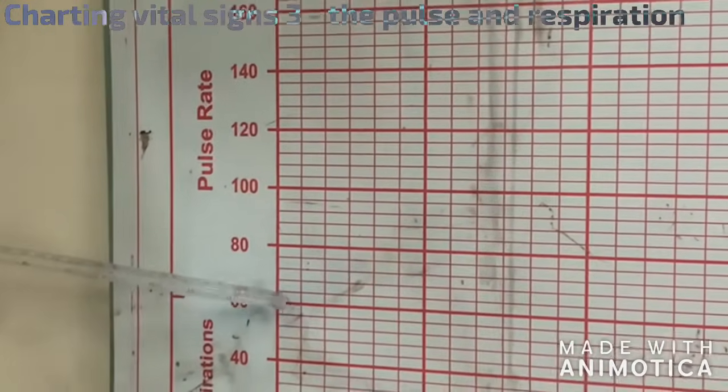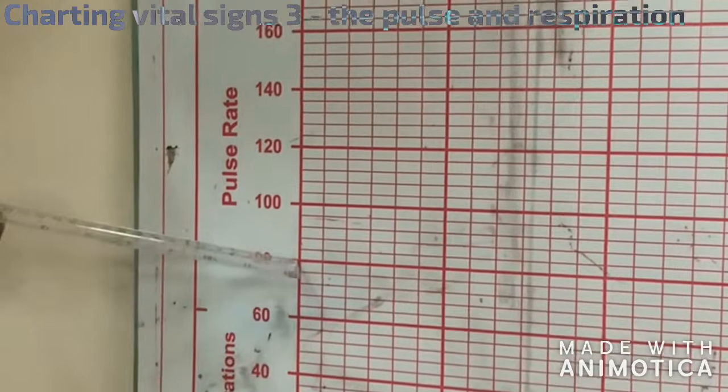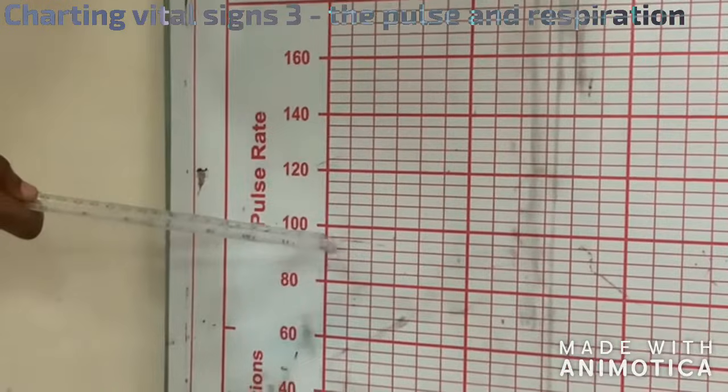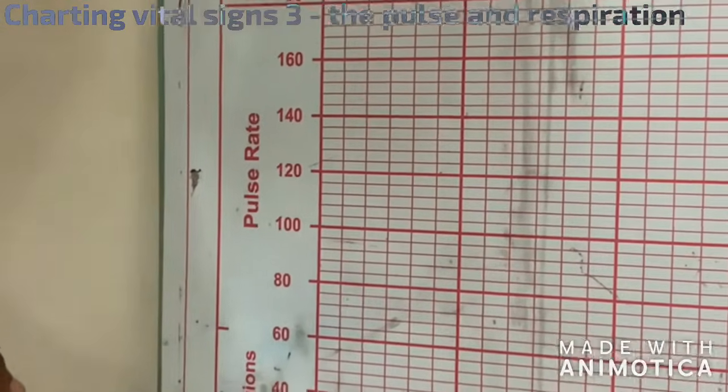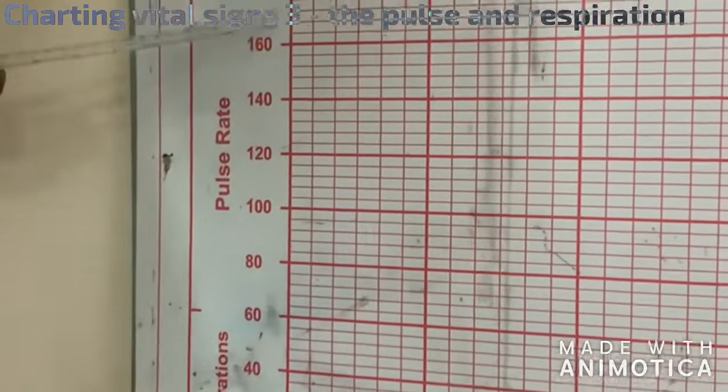So here is 64, 68, 72, 76, 80, 84, 88, 92, 96, 100. So this section, that is how it is. From respiration and after pulse, that's how it is.